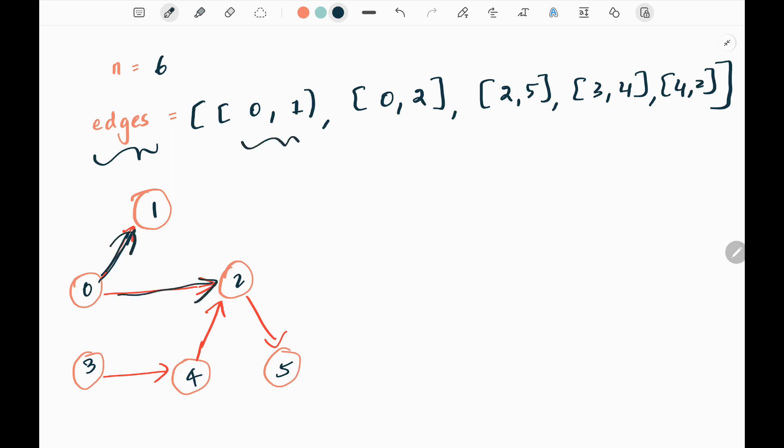In the problem statement it says that we have a directed graph and it doesn't contain a cycle. As a result, we need to return the number of minimum nodes, that is the minimum vertices required to reach all the nodes in the graph.